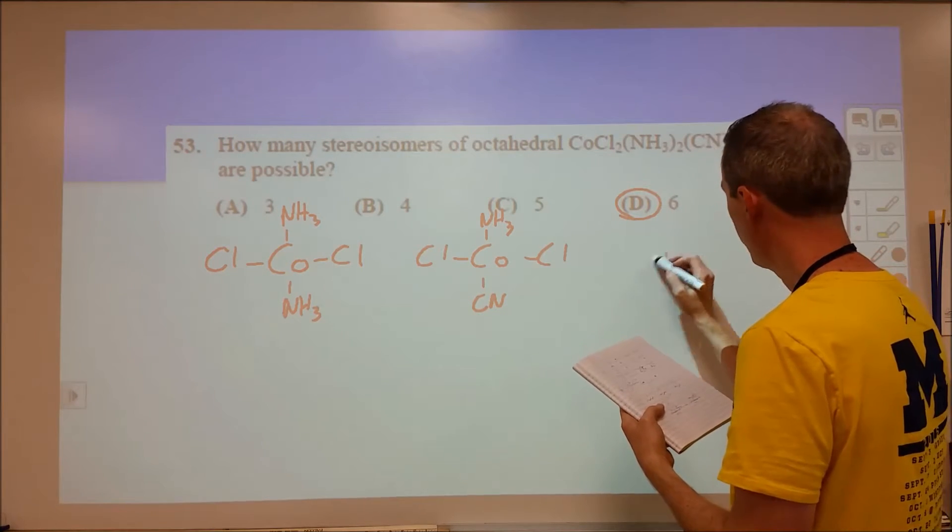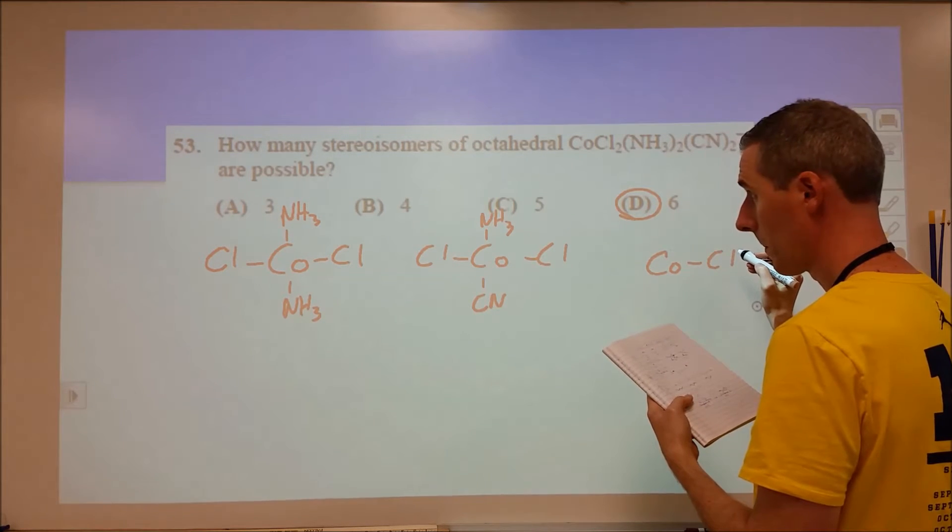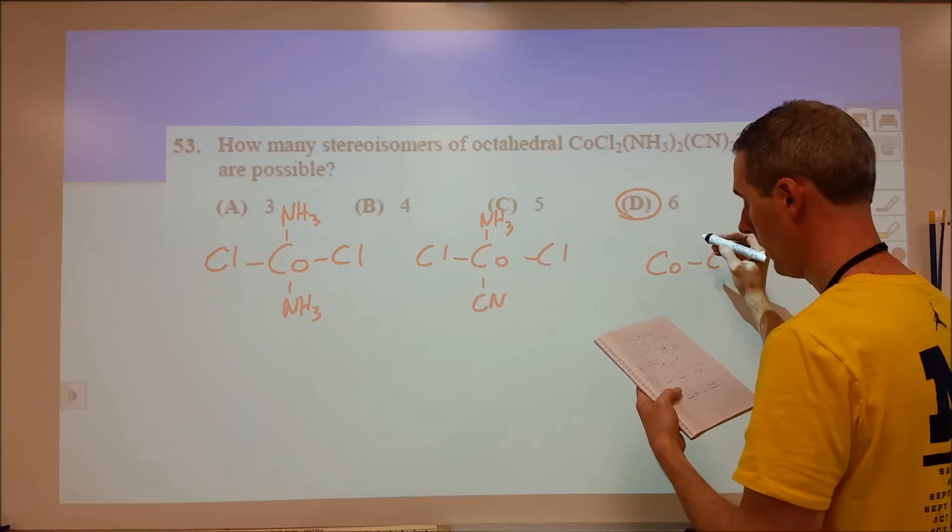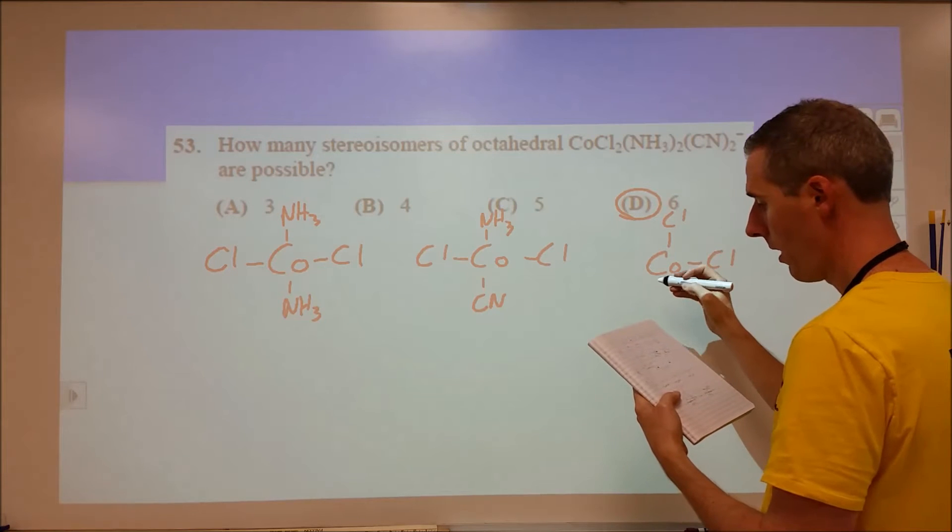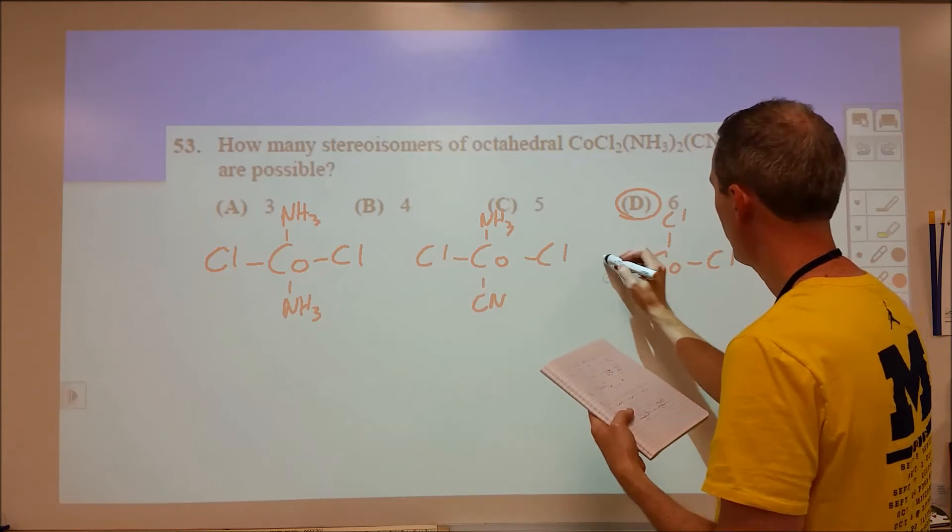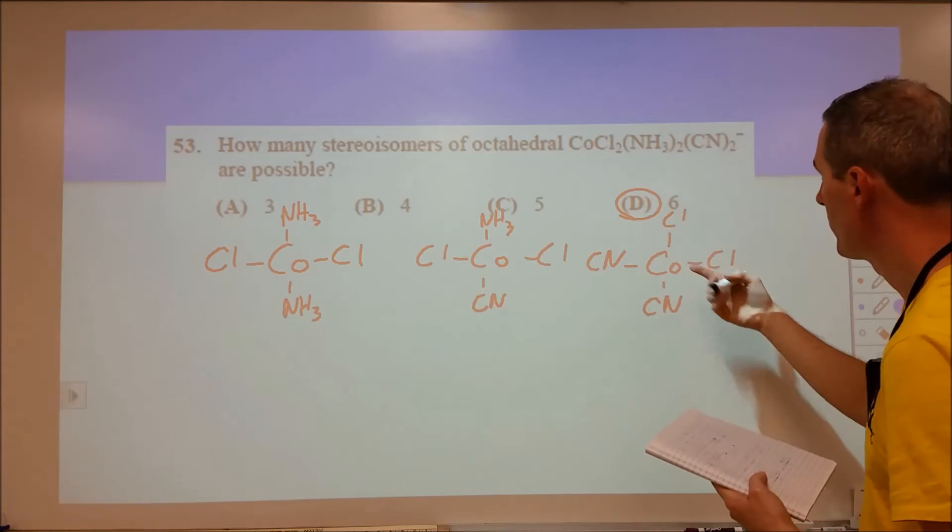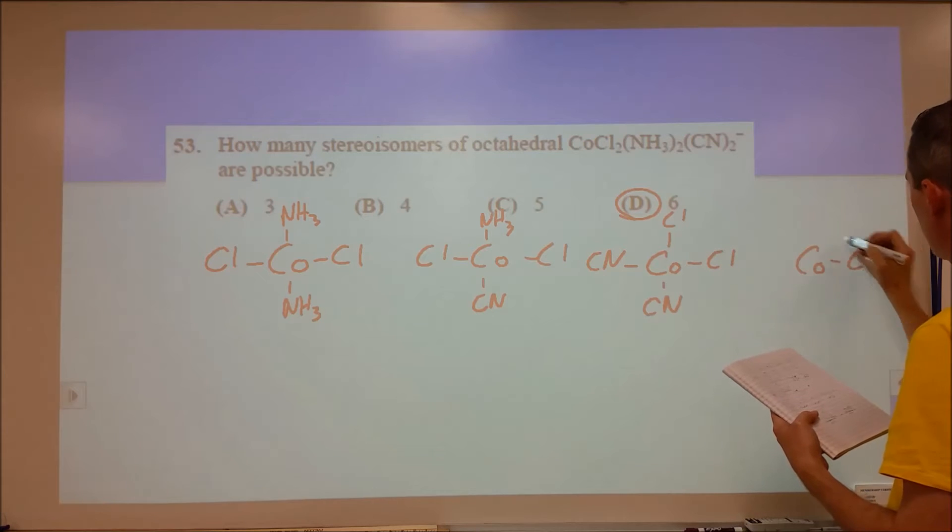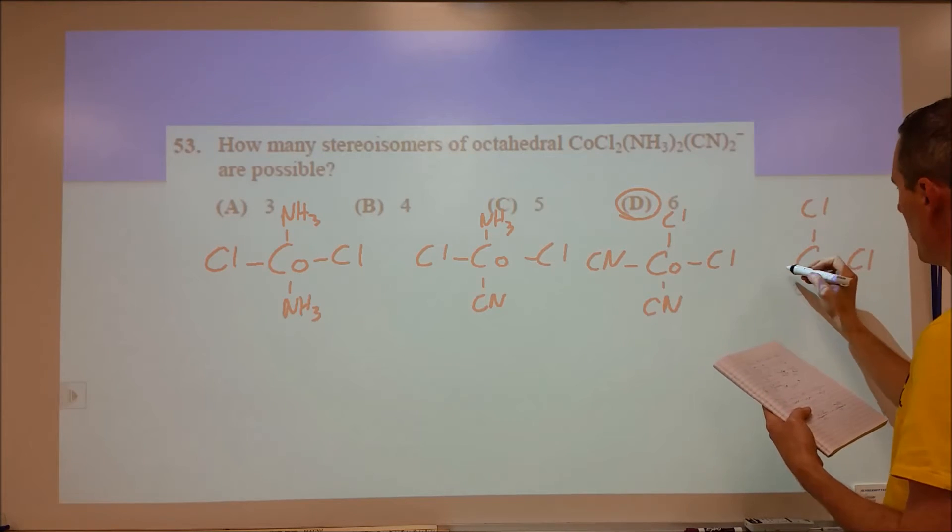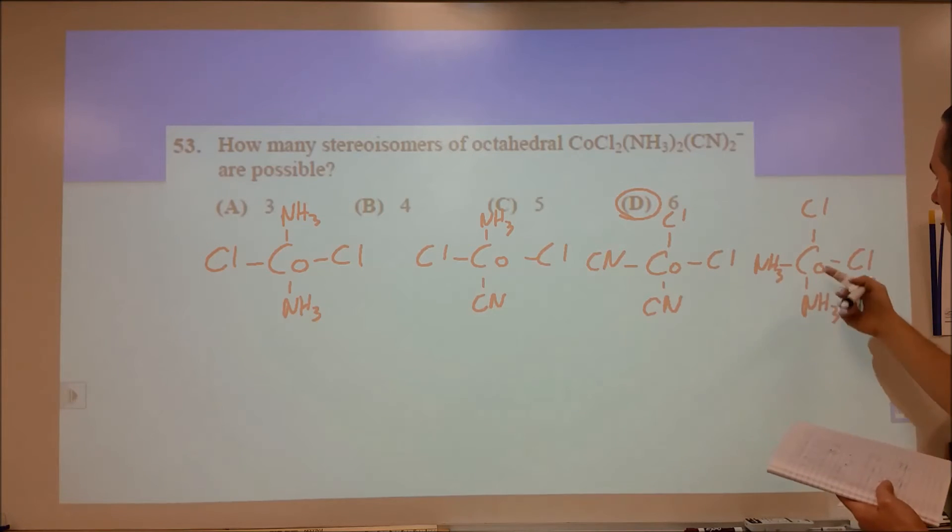Then we could also have cobalt to chlorine where they are not across from one another. And then we can have just the ammonias across from one another, cyanides not. Then we can also have cobalt, chlorine, chlorine, and we can have the ammonias at this angle, but then have the cyanides be apart from one another.